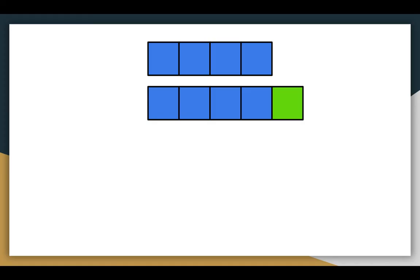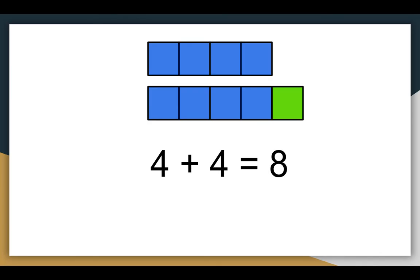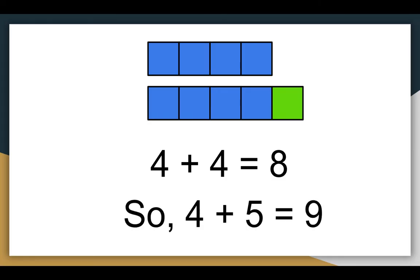The blue ones make four plus four. Thinking in my head, I know four plus four is eight. I only have one more than that, so four plus five equals nine. This is the same thinking — it's just using a different visual representation.